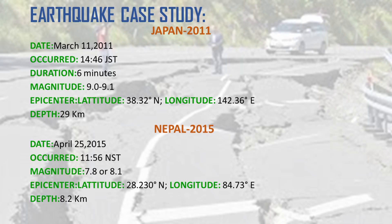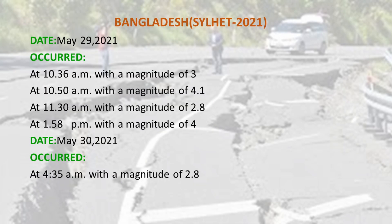We studied some earthquake cases. In Japan 2011, a big earthquake happened on 11th March with a magnitude of 9.1 on the Richter scale. The earthquake in Nepal 2015 was very destructive with a magnitude of 7.8 on the Richter scale. Recently, on May 29th in Bangladesh, four earthquakes happened in one day with magnitudes of 3, 4.1, 2.8, and 4 on the Richter scale respectively.